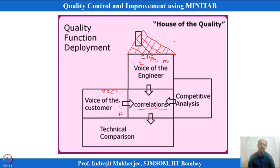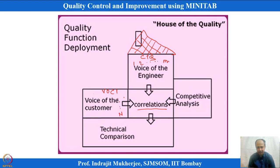There is a roof of the matrix, shown at the top of the House of Quality, which shows the correlation between CTQs themselves — for example, how CTQ 1 is related with CTQ 2. Each voice of the customer is also evaluated by customers, and the average rating is shown.